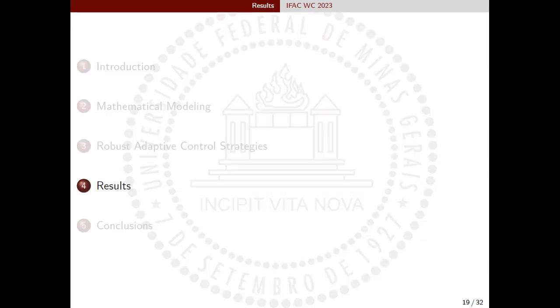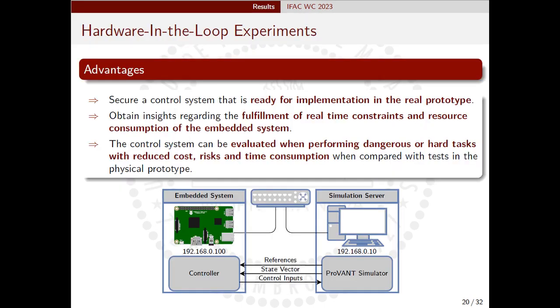Now we are going to show the numerical experiments conducted. We corroborate the efficiency of the proposed RAMCs with hardware-in-the-loop experiments conducted in the ProVANT simulator, a high-fidelity simulator based on computer-aided design models, which was developed using ROS and Gazebo platforms at the Federal University of Minas Gerais. The control law was executed in a Raspberry Pi 4 Model B SBC with a quad-core ARM Cortex-A72 processor running at 1.5 GHz, with 8 GB of DDR4 RAM and a VideoCore VI GPU. With these experiments we obtain insights regarding fulfillment of real-time constraints, ensuring a control system ready for implementation in the real prototype.